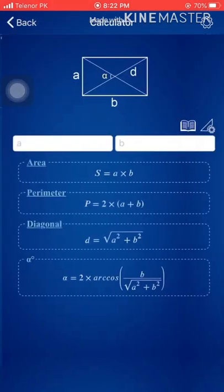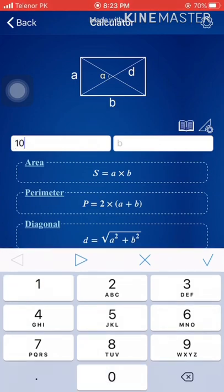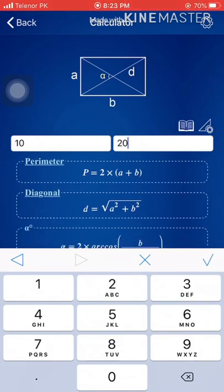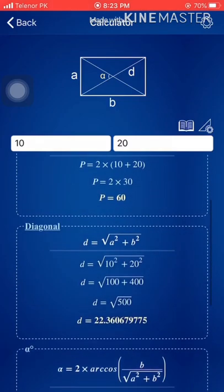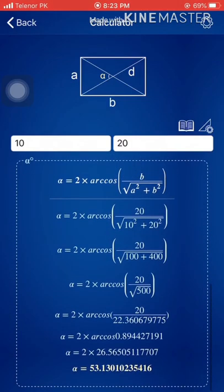Let me try a rectangle. Let's say the breadth is 20 units and the height or width is 10 units — I'll tap update. Area, perimeter, diagonal, alpha, beta, and gamma can all be calculated. In this case we have alpha, which is the central angle between the diagonals. You can see it from the diagram — not a complicated thing.